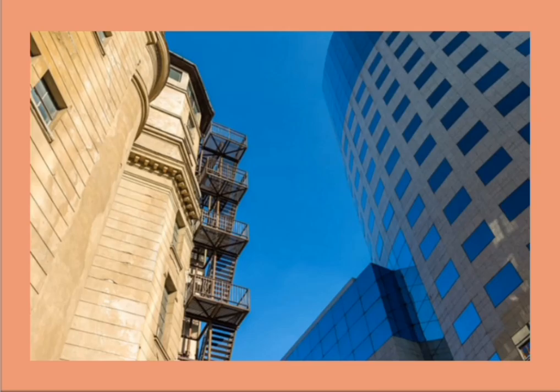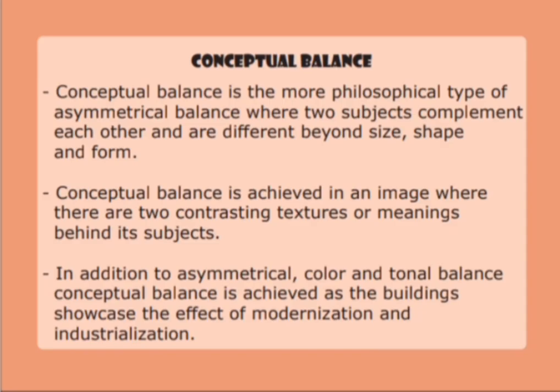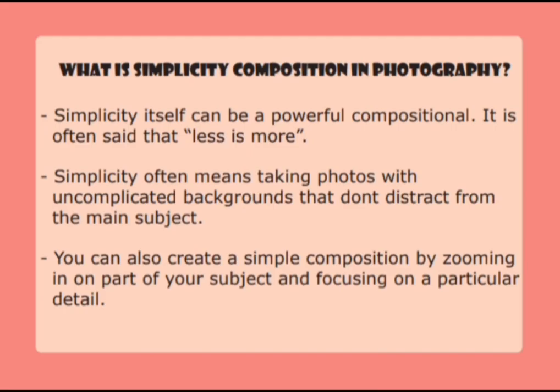The next balance is conceptual balance. Conceptual balance is the more philosophical type of asymmetrical balance where two subjects complement each other and are different beyond size, shape and form. Conceptual balance is achieved in an image where there are two contrasting textures or meanings behind its subject. In addition to asymmetrical, colour and tonal balance, conceptual balance is achieved as the building showcases the effect of modernisation and industrialisation.